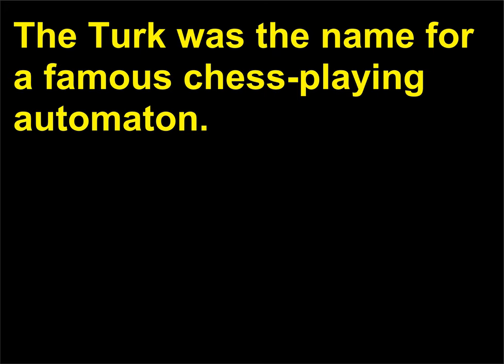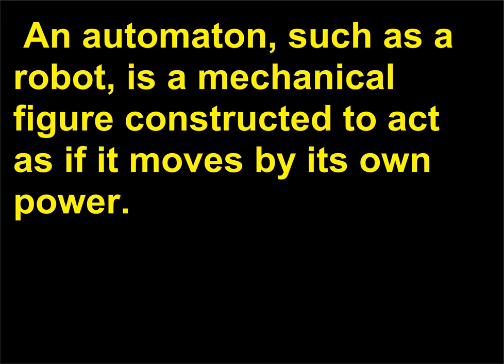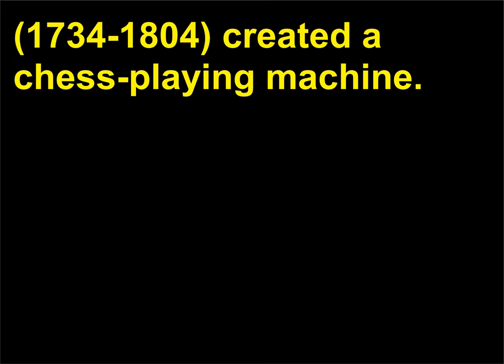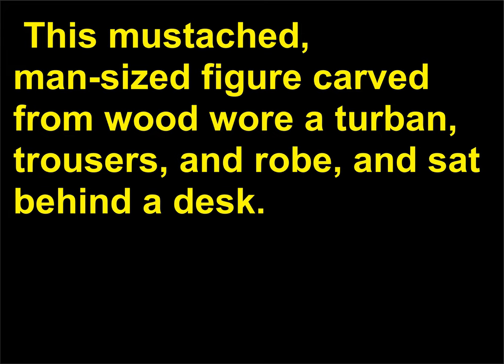What was the Turk? The Turk was the name for a famous chess-playing automaton. An automaton, such as a robot, is a mechanical figure constructed to act as if it moves by its own power. On a dare in 1770, a civil servant in the Vienna Imperial Court named Wolfgang von Kempelen, 1734–1804, created a chess-playing machine. This mustached, man-sized figure carved from wood wore a turban, trousers, and robe, and sat behind a desk.